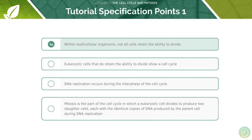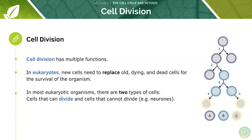We'll start by looking at the ability of cells to divide. Cell division has multiple functions. In eukaryotes, cells need to divide and replace old, dying and dead cells for the survival and growth of the organism. In most eukaryotic organisms we have two types of cells: some cells that can divide and some cells that cannot divide.